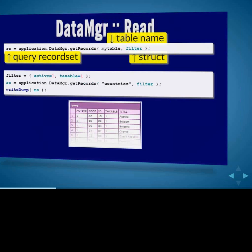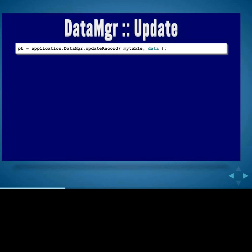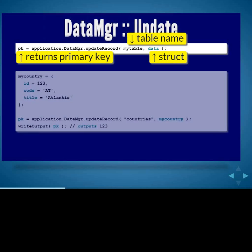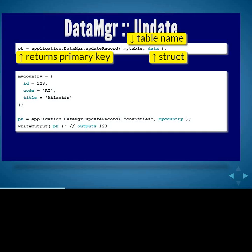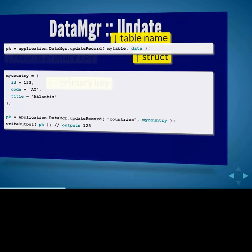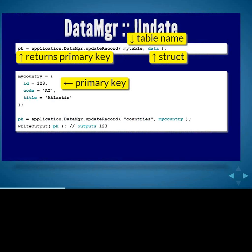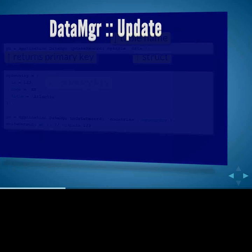Moving on to Update. There's a suitably named method: updateRecord. You pass in the table name and a struct of data. This will update one record in your database and return the primary key. Here I've got the country as a struct with the ID and other fields. If I wanted to change El Dorado — say I found out it didn't really exist and was the same as Atlantis — I'd pass in the primary key to tell Data Manager which record to update, and the other fields tell it what the new values should be.